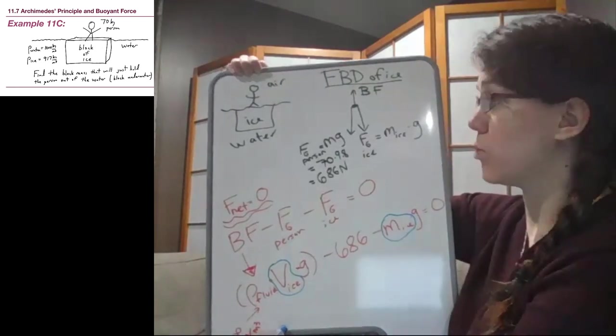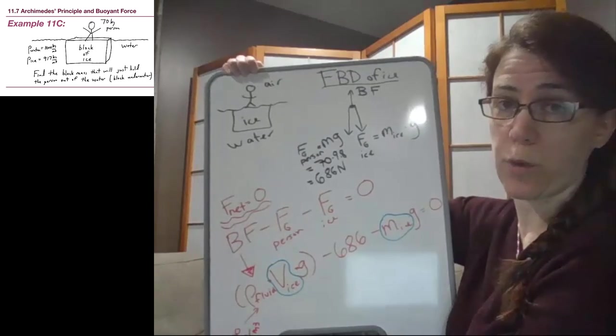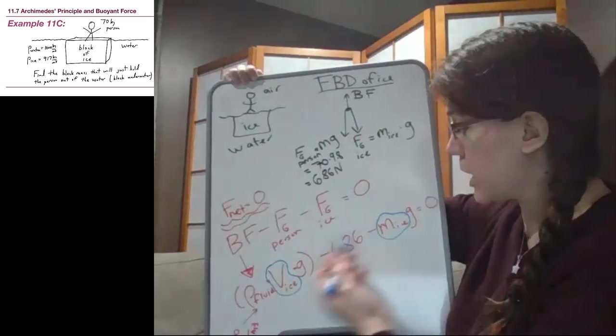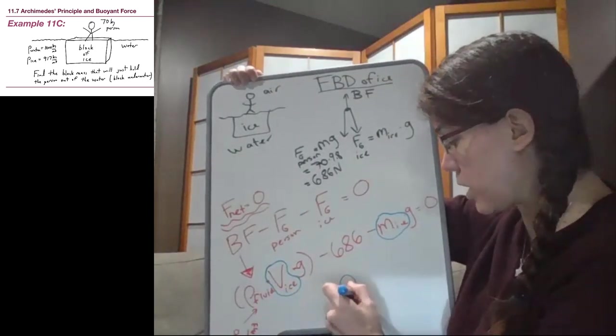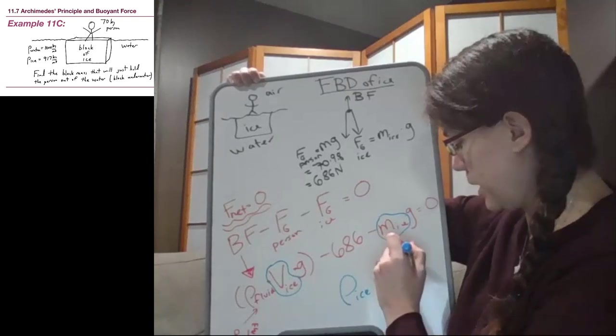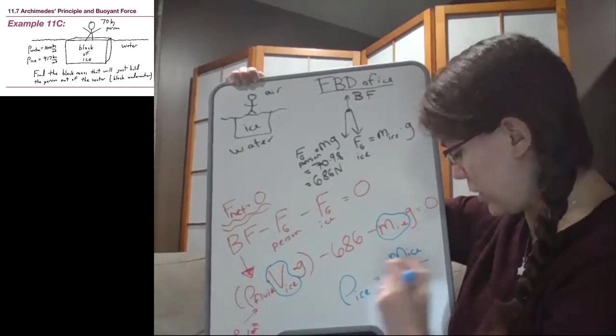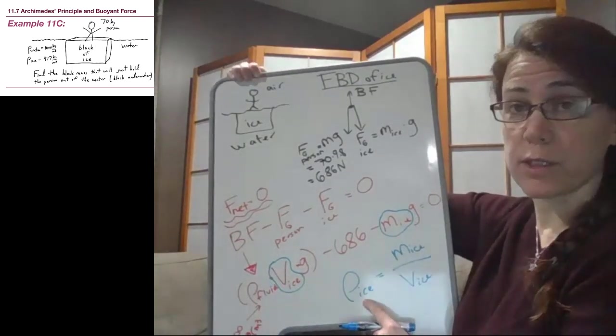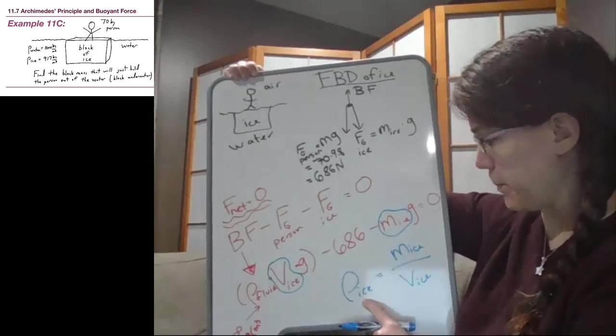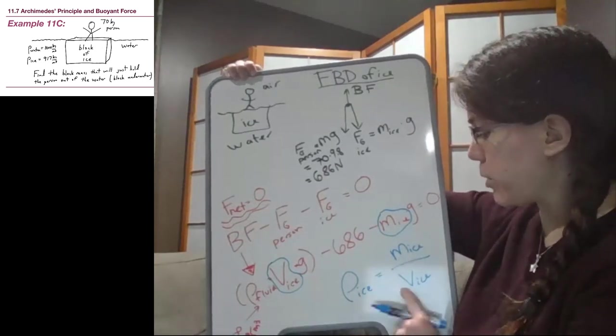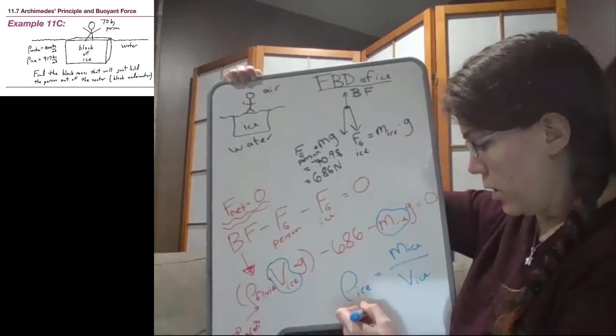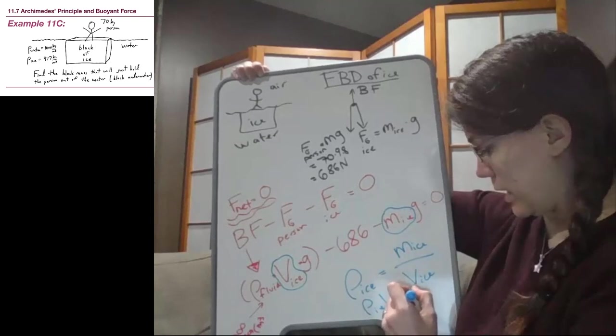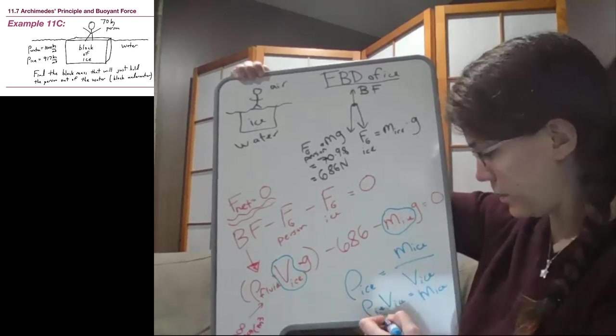But just like with the iron in the previous example, because this is talking about the same object, we can talk about the density as a way to find one of our unknowns in terms of the other. We know that the density of ice is 917 kilograms per cubic meter. So if we multiply both sides by volume here, we have that the density of the ice times the volume of the ice is equal to the mass.